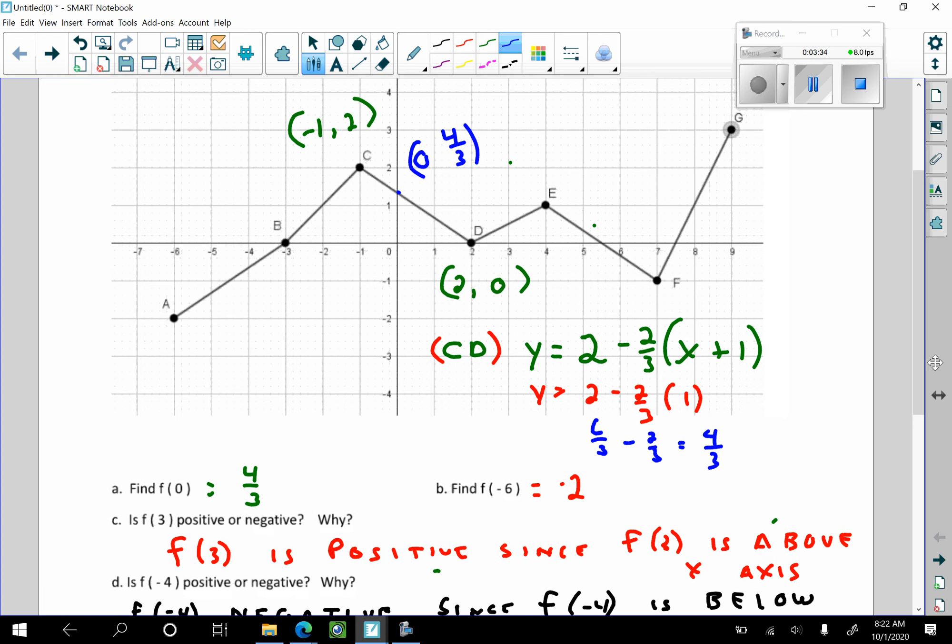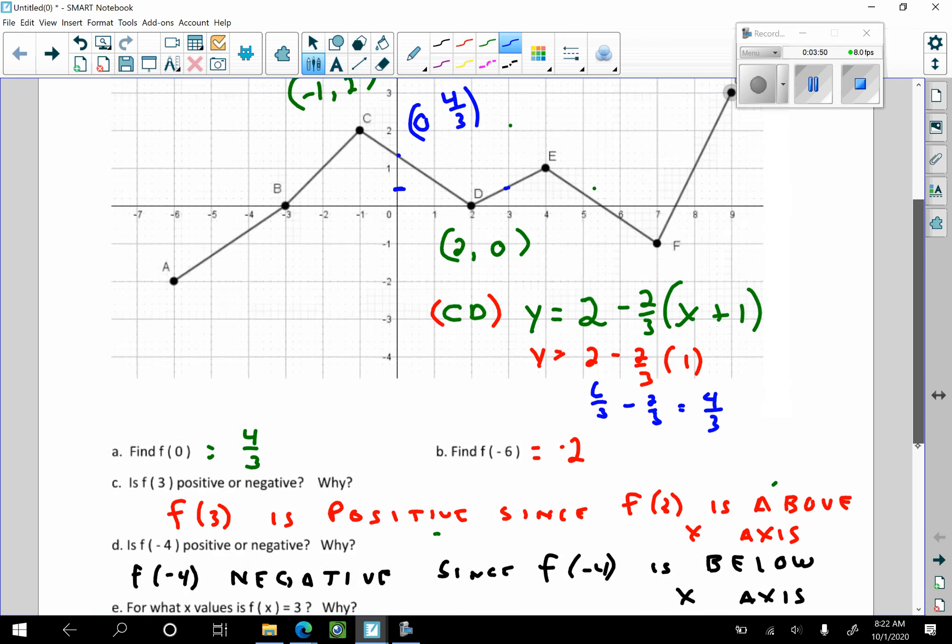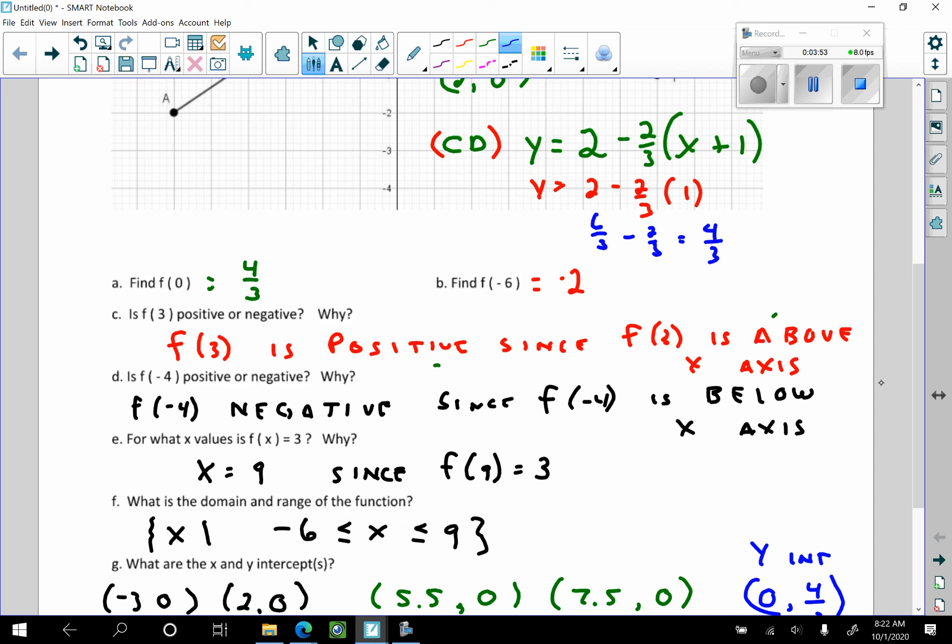So where is f of 3? I don't know. Oh yes, I do. This is 3. That f of 3 is going to be that y value, correct? And I could find that. But is f of 3 positive or negative? It is positive. Why is it positive? Because f of 3 is above the x axis. And that seems like, to a math teacher, that's like, well, duh. But to a math student at this point, I don't think you've ever been asked to think about, maybe you just haven't. f of 3 is a y value. That y value is above the x axis. That's why f of 3 is positive.